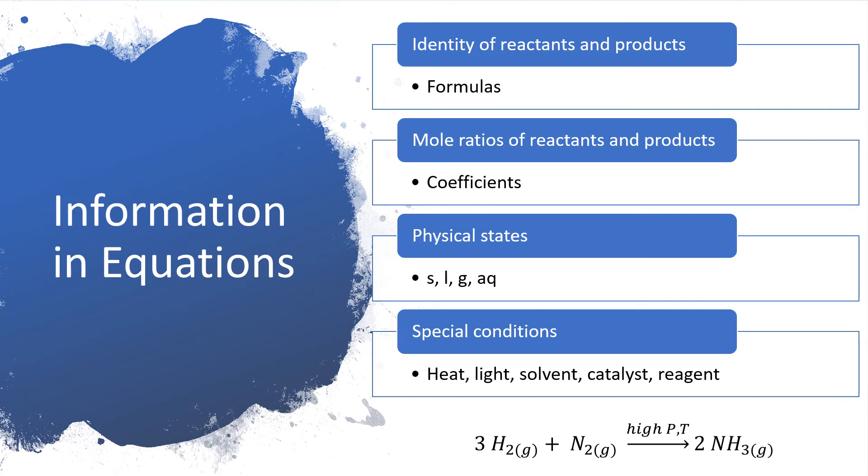Chemical equations contain a huge amount of information packed into a very condensed notation. So one of the things that any chemical reaction will have is it will specify the identity of the reactants and products. That's done by the chemical formulas that make up the equation. We also will see what's known as the mole ratio of the reactants and products. That'll make more sense a little bit down the road in this chapter. But for now, that's basically what we're saying there is that we put coefficients out in front of the different formulas as we balance the equation.